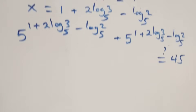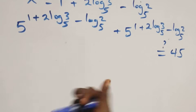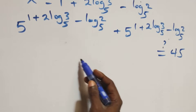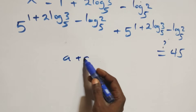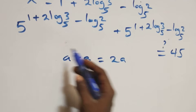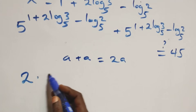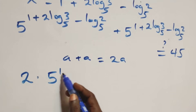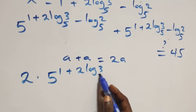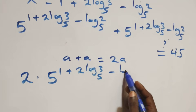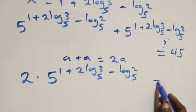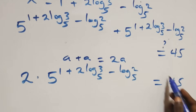From here, since we have a plus a — the same thing — that is 2 times a. So we can write what we have as 2 times 5 raised to power (1 plus 2·log₅3 minus log₅2), and this equals to 45.